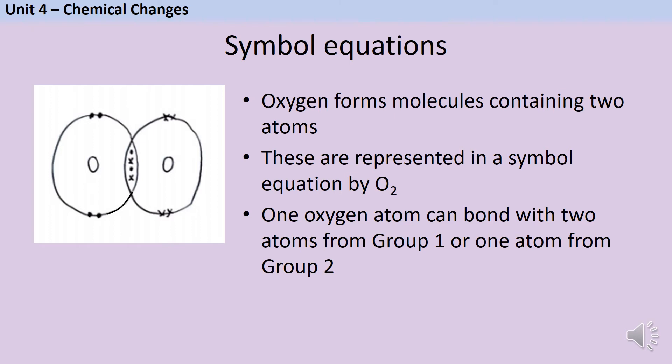In order to write symbol equations for the oxidation of metals, we need to know a little bit about oxygen. Oxygen mainly exists in the world as diatomic molecules. These are molecules that contain two atoms and they're represented in a symbol equation by O2. The little two tells you that there are two oxygen atoms. One oxygen atom is able to form bonds with two atoms that come from Group 1 or one atom that comes from Group 2.